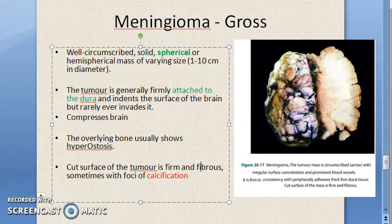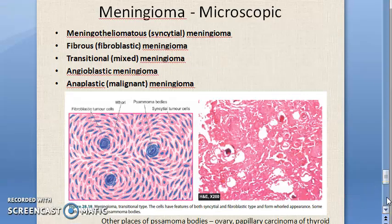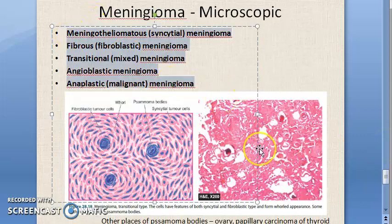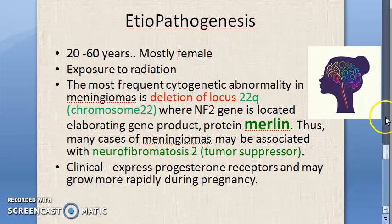Now moving on to the microscopy of meningioma - we will cover that in the next video. There are about five microscopic patterns to cover. Come back for the microscopy; we will meet in the next video. Let's revise what we have seen so far.